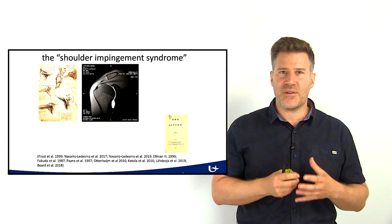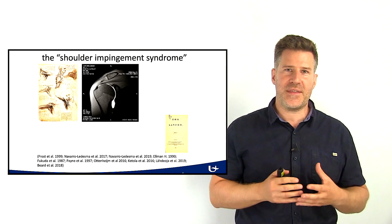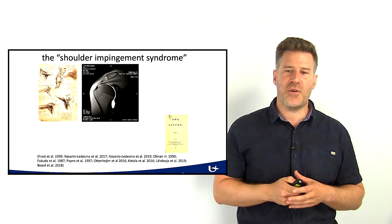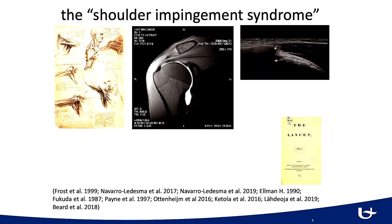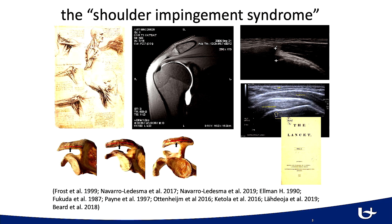There is also no scientific proof that the shape of the acromion is the cause of shoulder pain. In fact, most of the supraspinatus tendons show their injuries at the humeral side, and not at the acromial side, which should have been the case if the acromion was to blame.